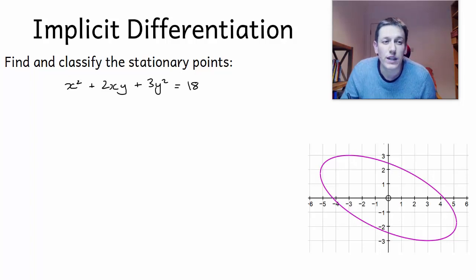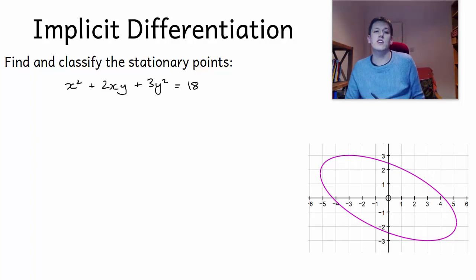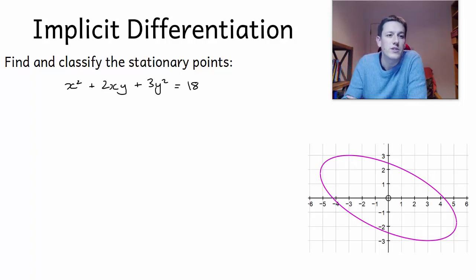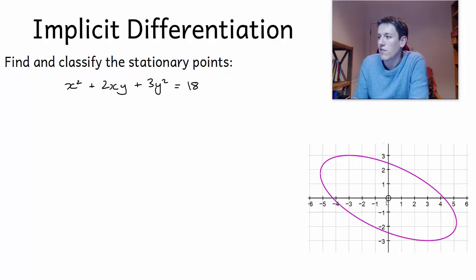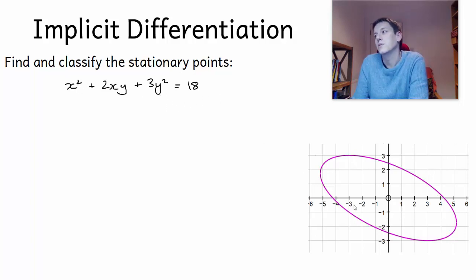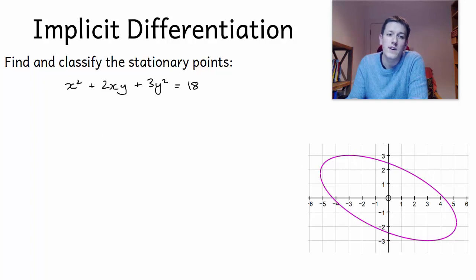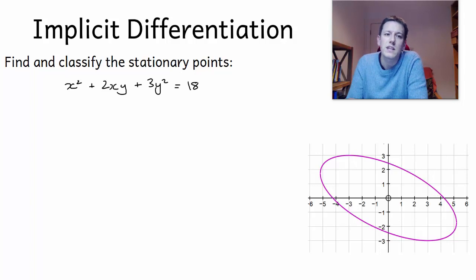In the previous video we covered the basics of implicit differentiation, and in this video I'd like to solve a problem which is finding and classifying the stationary points of this curve which has been defined implicitly. I've pulled up the graph of the curve here: x squared plus 2xy plus 3y squared equals 18, and you can see that we have an ellipse. So to find the stationary points, as always, we're going to look for points where dy/dx equals zero, but to begin with we need to differentiate both sides of the equation implicitly.